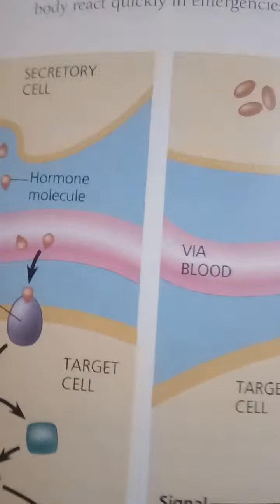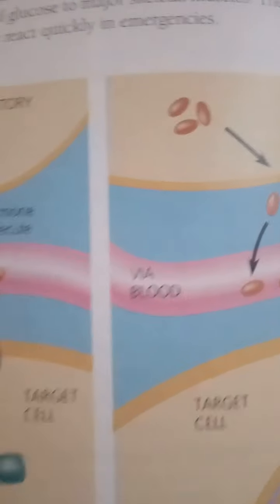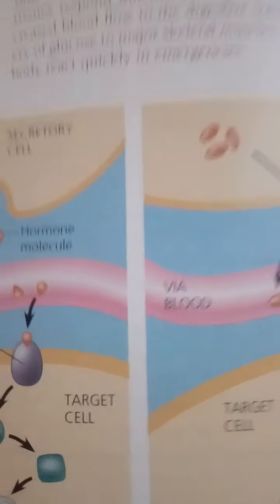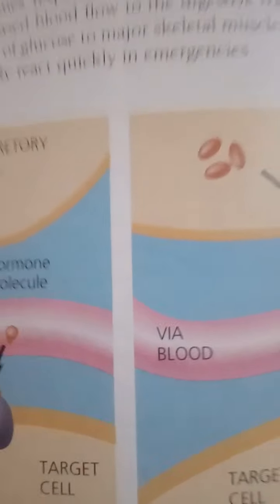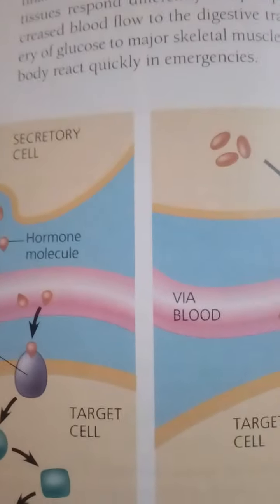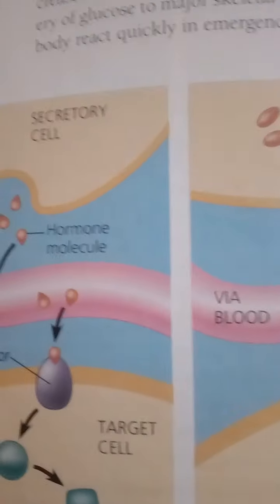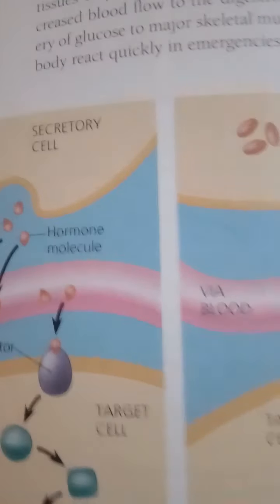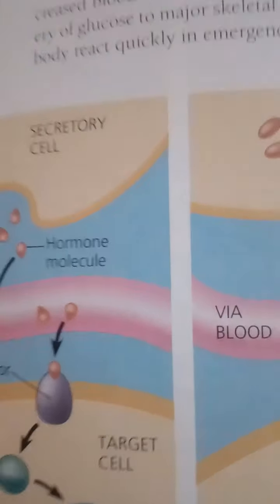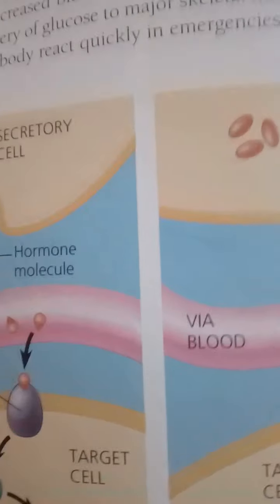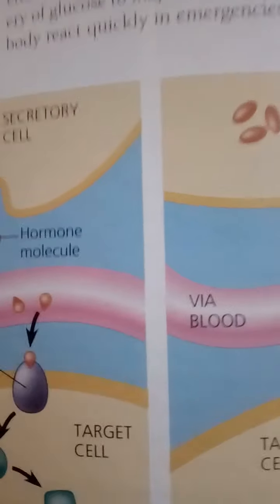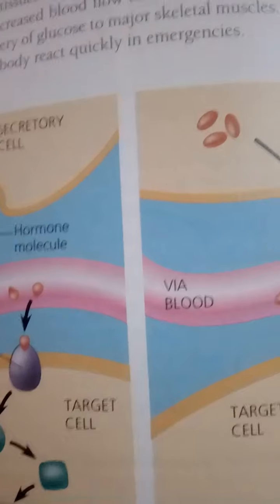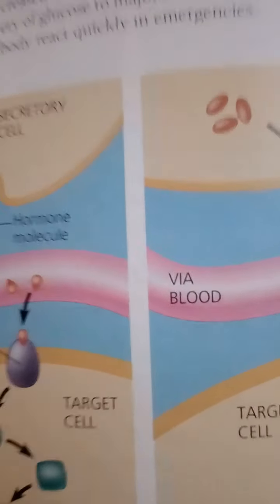Early evidence for the role of cell surface receptors in triggering signal transduction pathways came from studies on how the hormone epinephrine stimulates breakdown of glycogen to glucose. Another demonstration of the role of cell surface receptors involves changes in a frog's skin color — an adaptation that helps camouflage the frog in changing light. Skin cells called melanocytes contain the dark brown pigment melanin in cytoplasmic organelles called melanosomes.